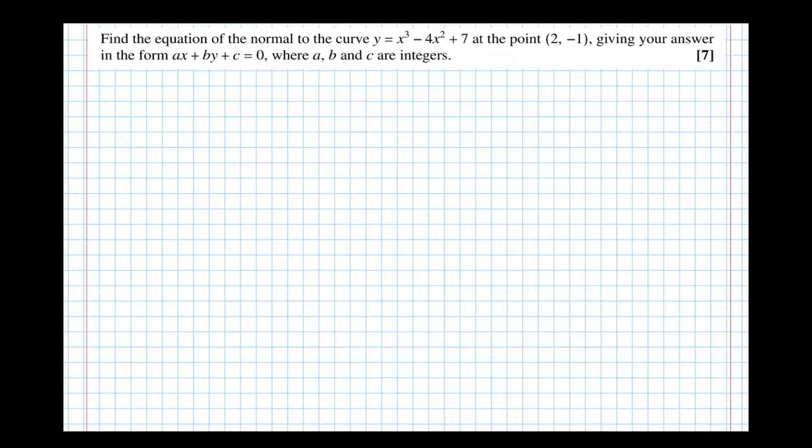Well first thing, in order to find the equation of a straight line, and that's what a normal is, we need to know its gradient and a point on the line. We've already got a point on the line, the question's told us, the point (2, -1) lies on the normal, so all we need to find now is the gradient.